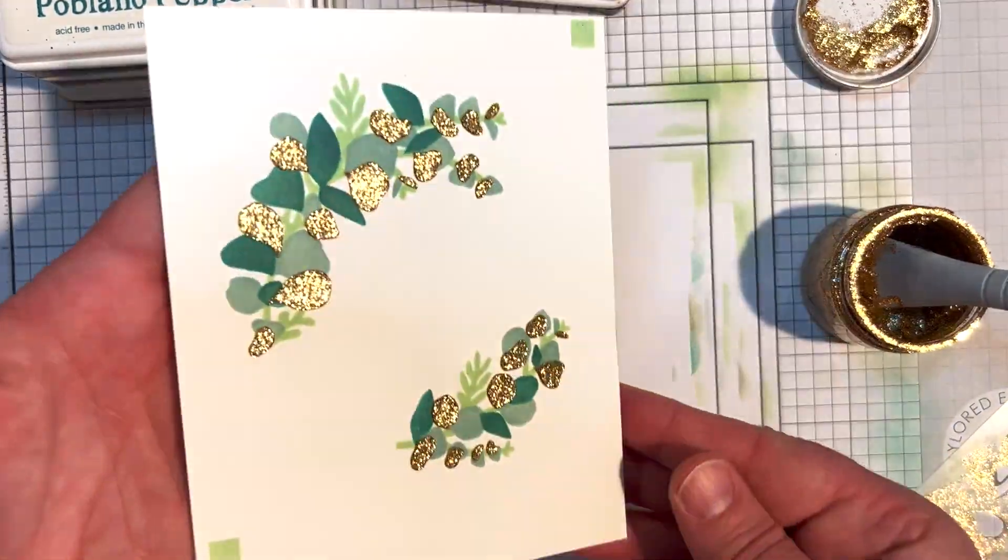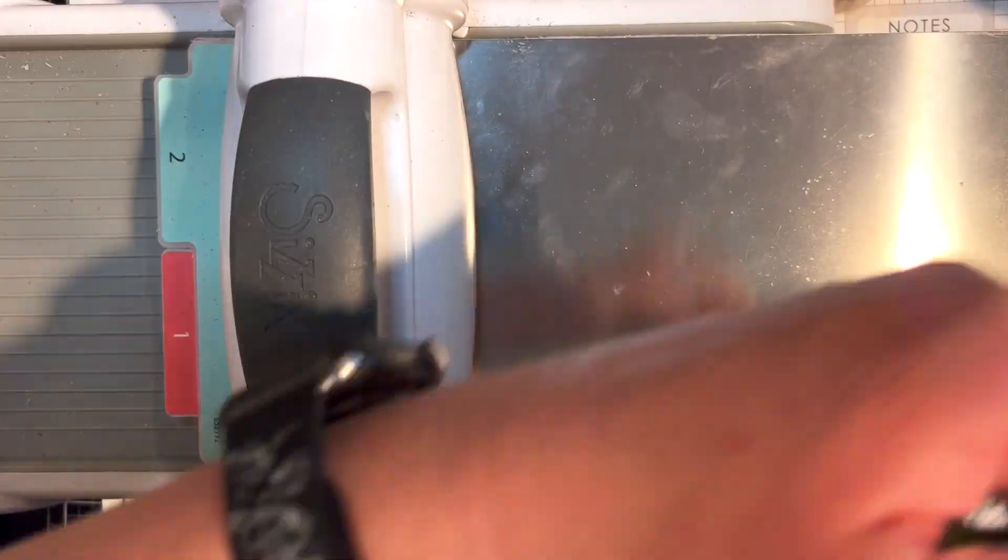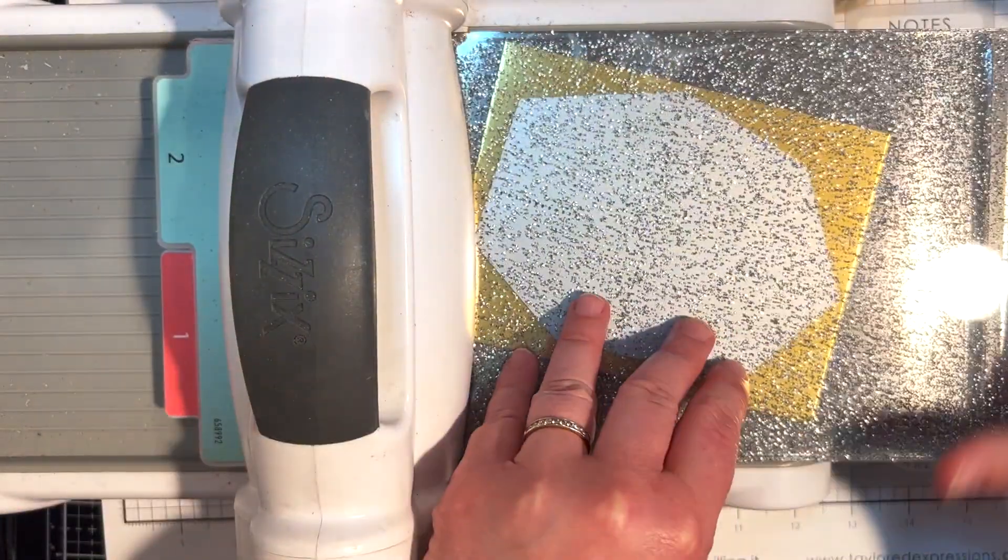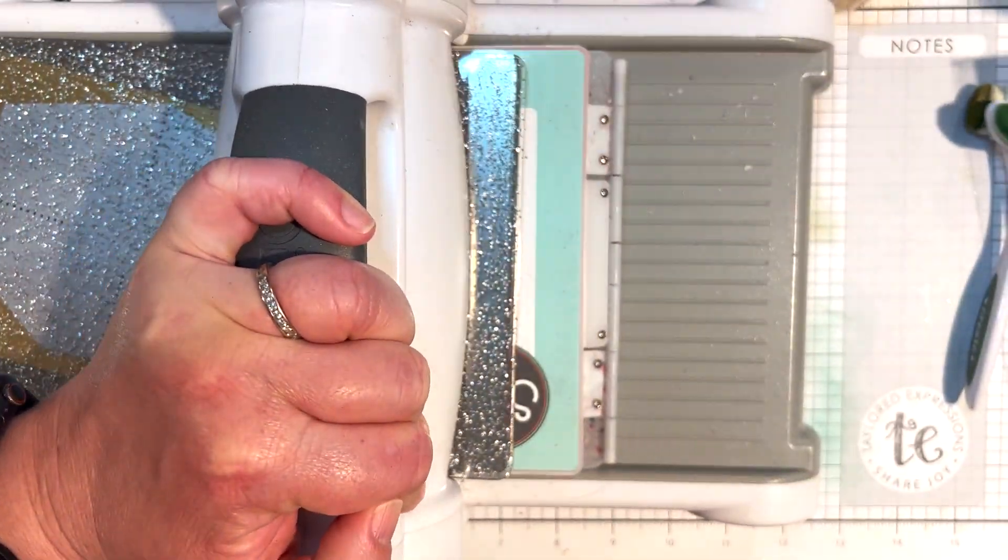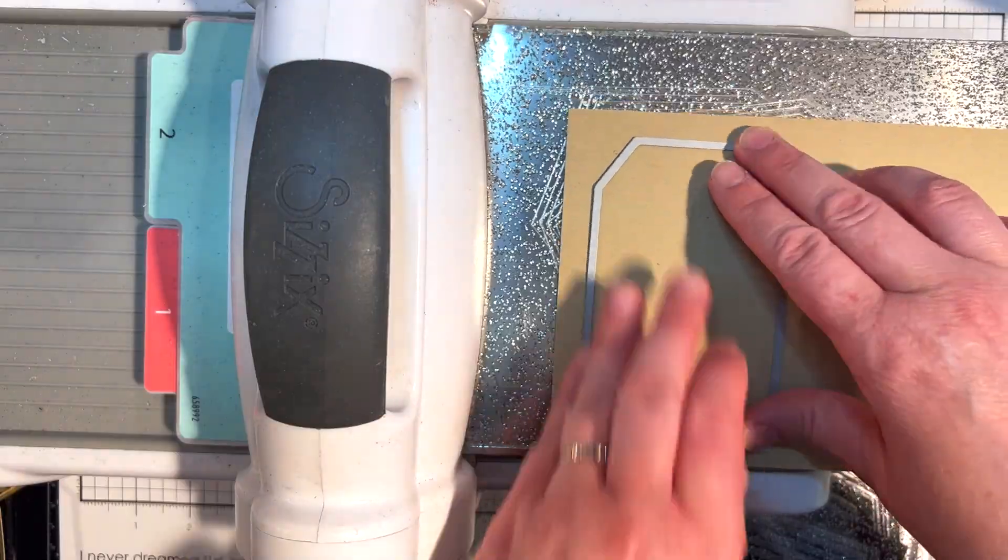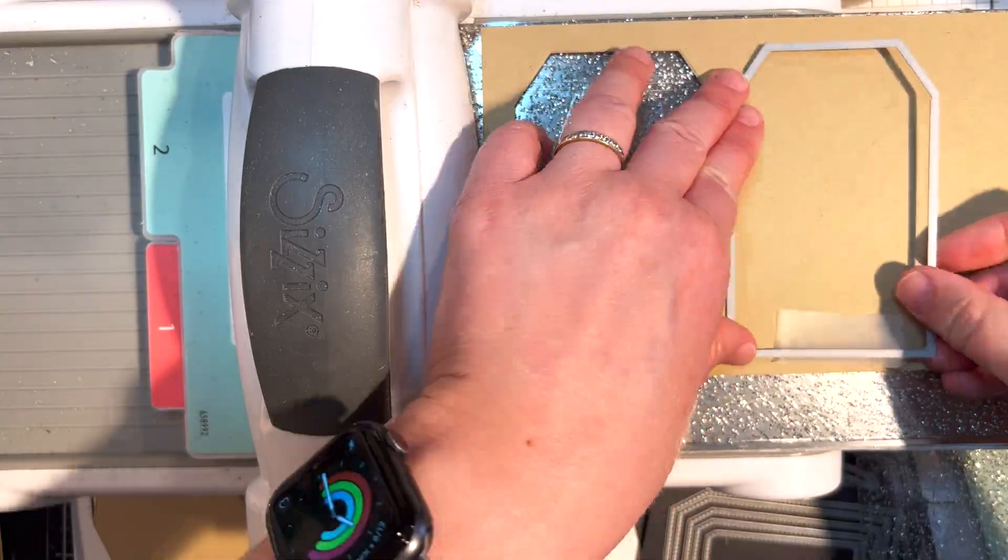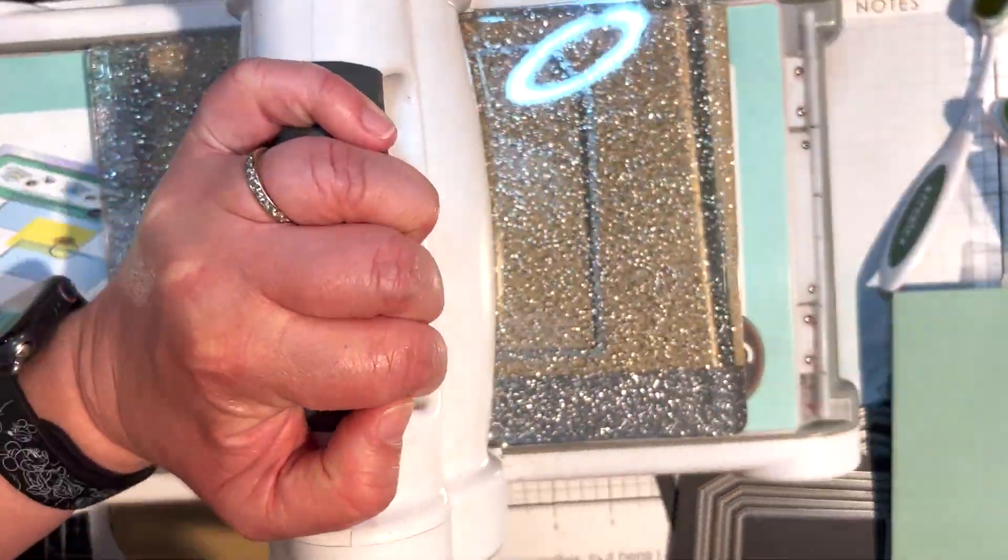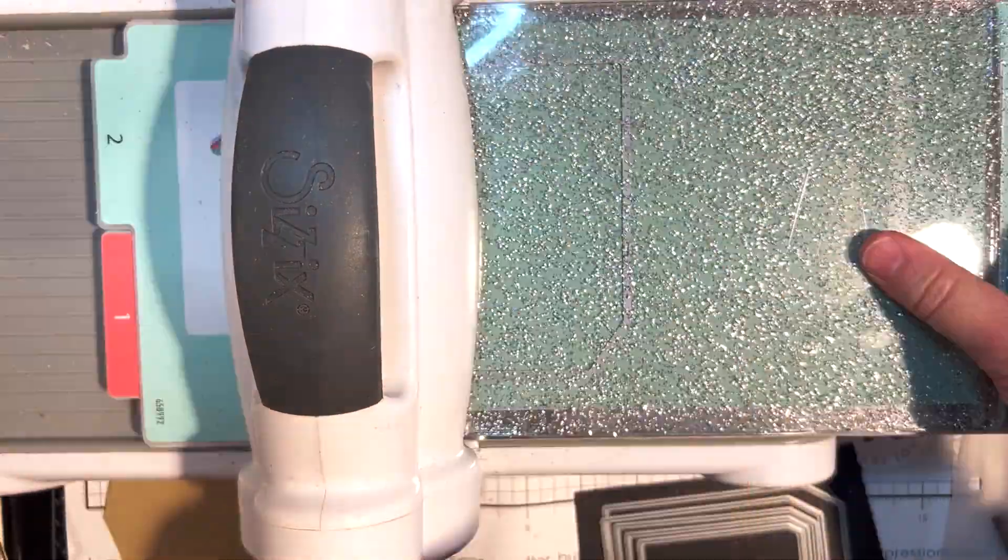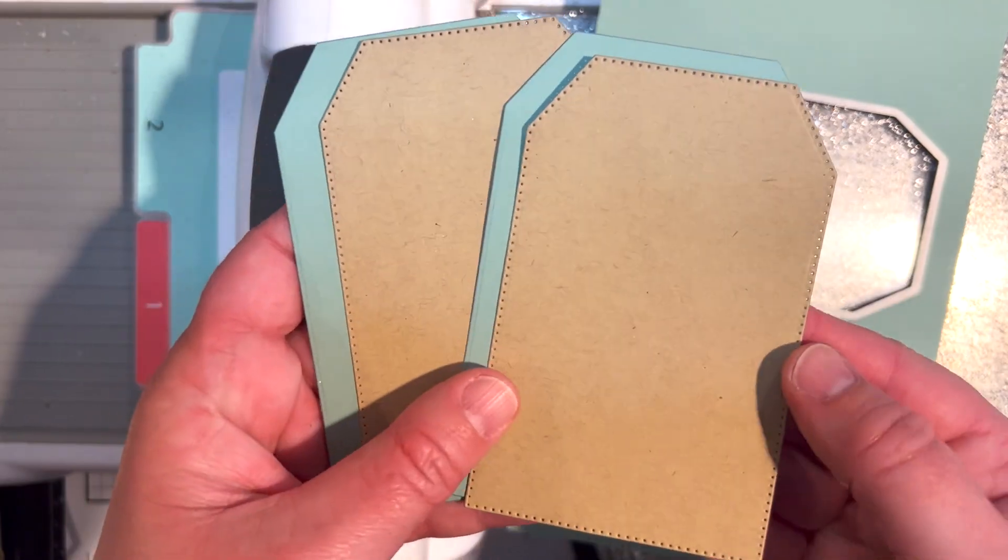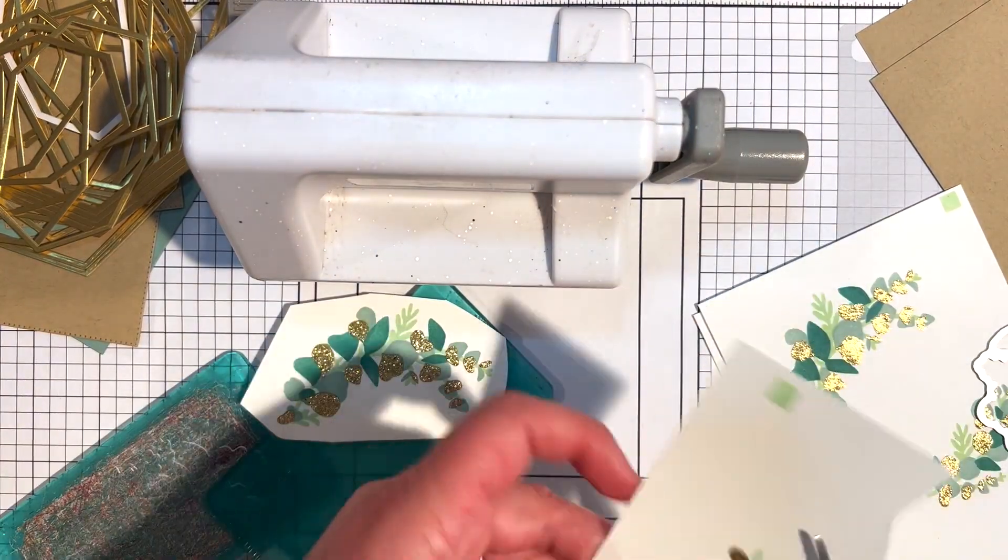While that's drying, I'm working on some other parts of my project. I'm using the gemstone thin frame cutting plate to cut out frames from gold foil cardstock. I also cut out tag bases for my coordinating tags. I'm using the pierced tag stacklets 2 die collection, cutting that from toffee cardstock, and also the tag stacklets 2 die collection that I'm cutting from spearmint cardstock.